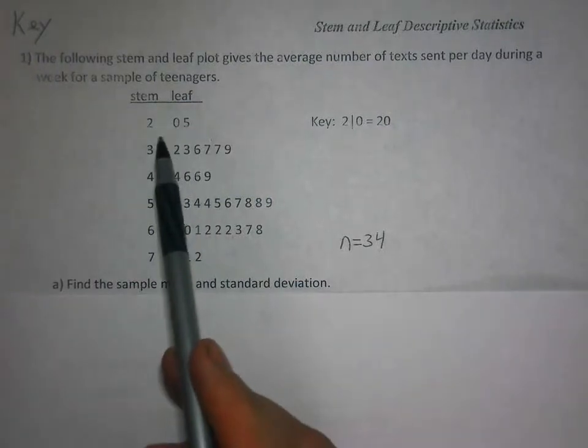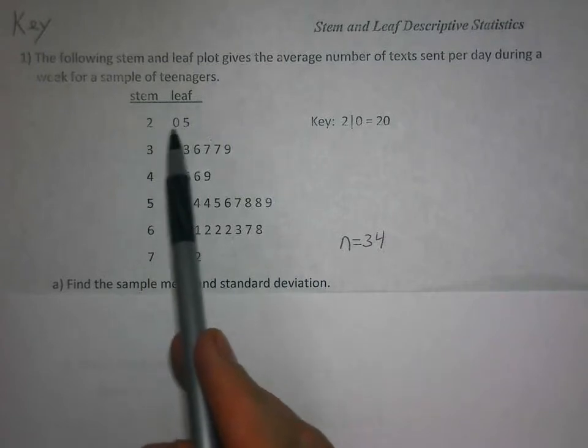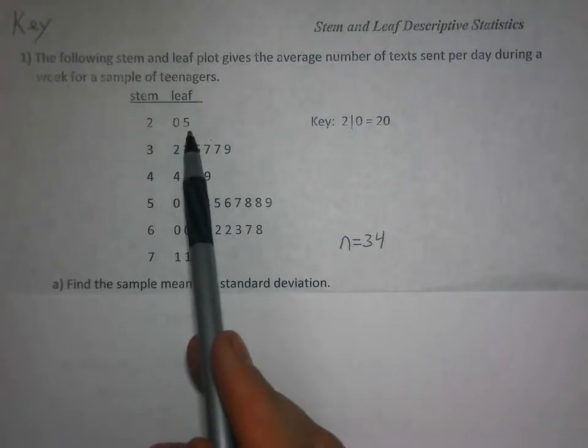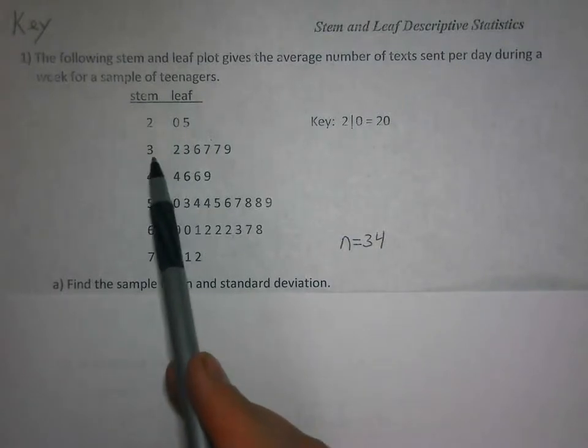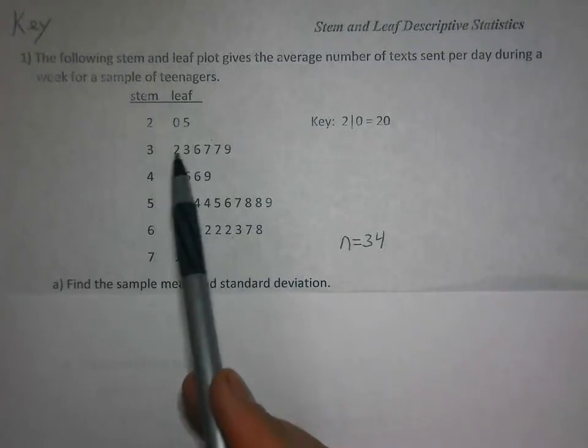Getting back to the numbers here, that first row says that we had one student in the sample had 20 texts on average during the week, another student had 25, another student 32, another student 33, and so on.